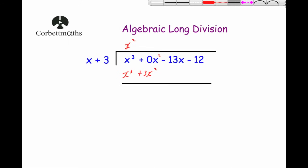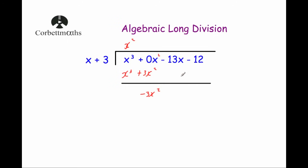Subtracting: x cubed take away x cubed is 0. 0x squared take away 3x squared is minus 3x squared. And minus 13x take away 12 carries down. Now divide: minus 3x squared divided by x is minus 3x. Multiply: minus 3x times x is minus 3x squared, and minus 3x times 3 is minus 9x.